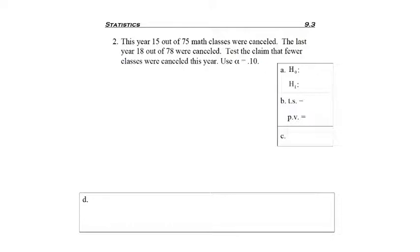The problem starts off saying this year, so this year is our first population, and we can start with P1. It's being compared to last year, so last year is P2. We know that H0 can only have equality. Going back and reading the question, it says test the claim that fewer. We know fewer is less than, but be careful how the question's asked. It says fewer classes this year. This year is our first population, and that's the one that's smaller or less than. So we'll be using less than. H1 is our claim.